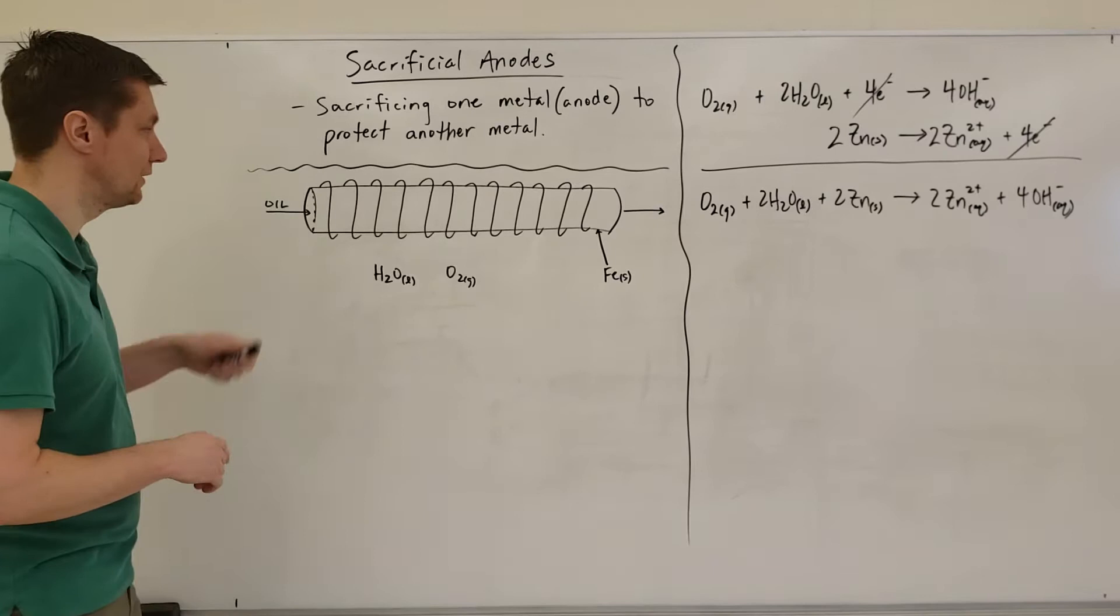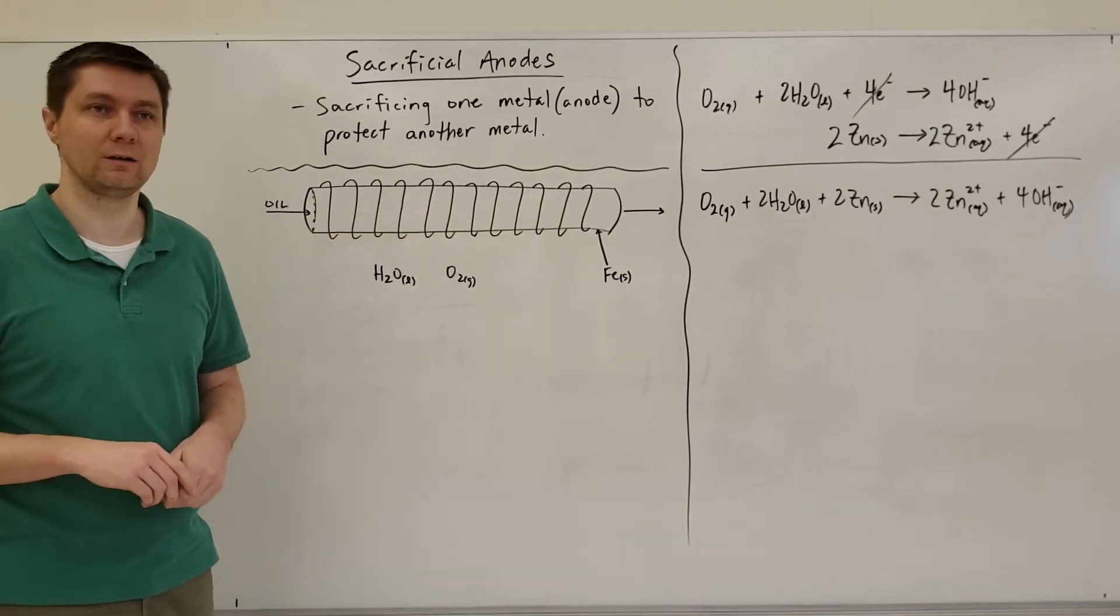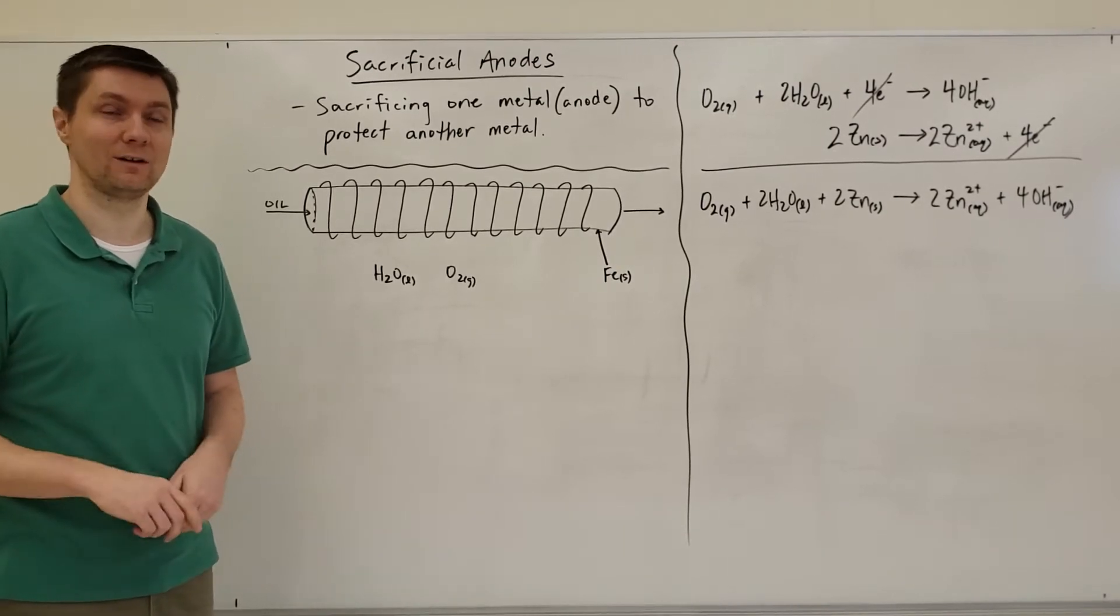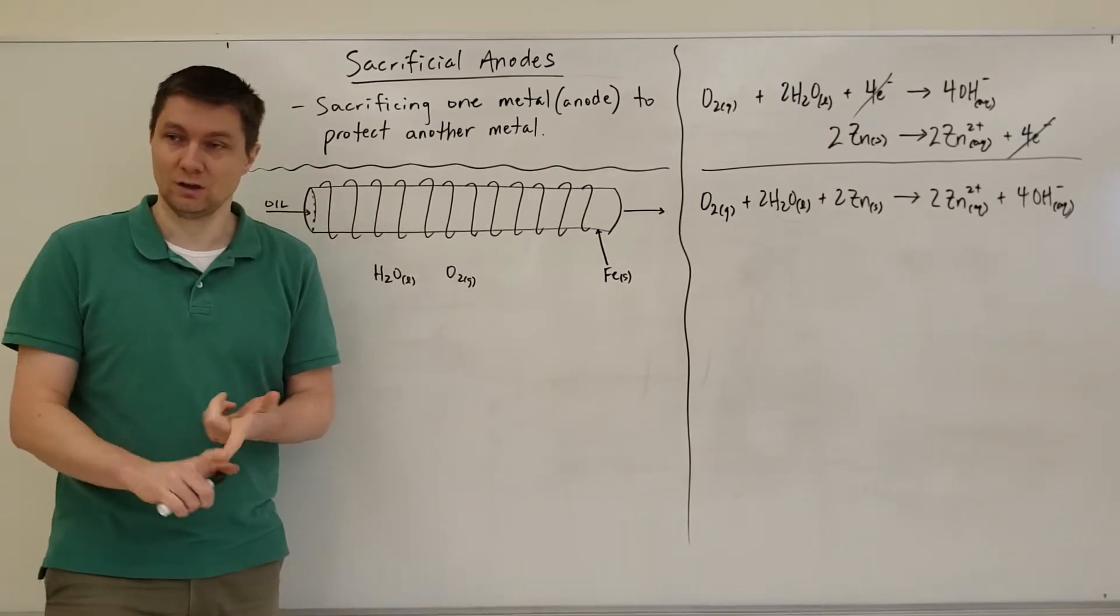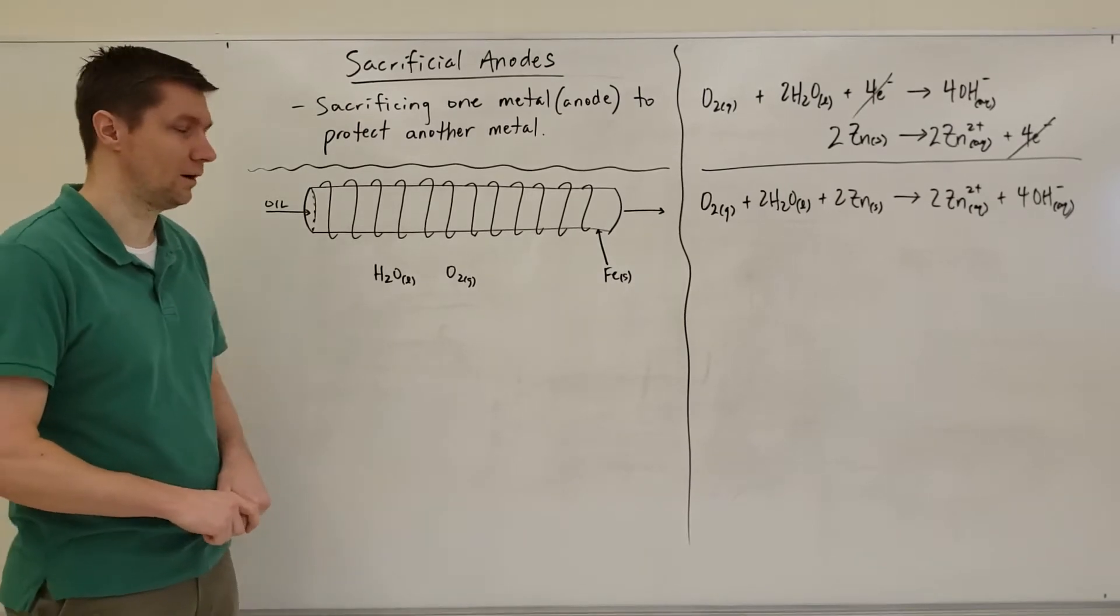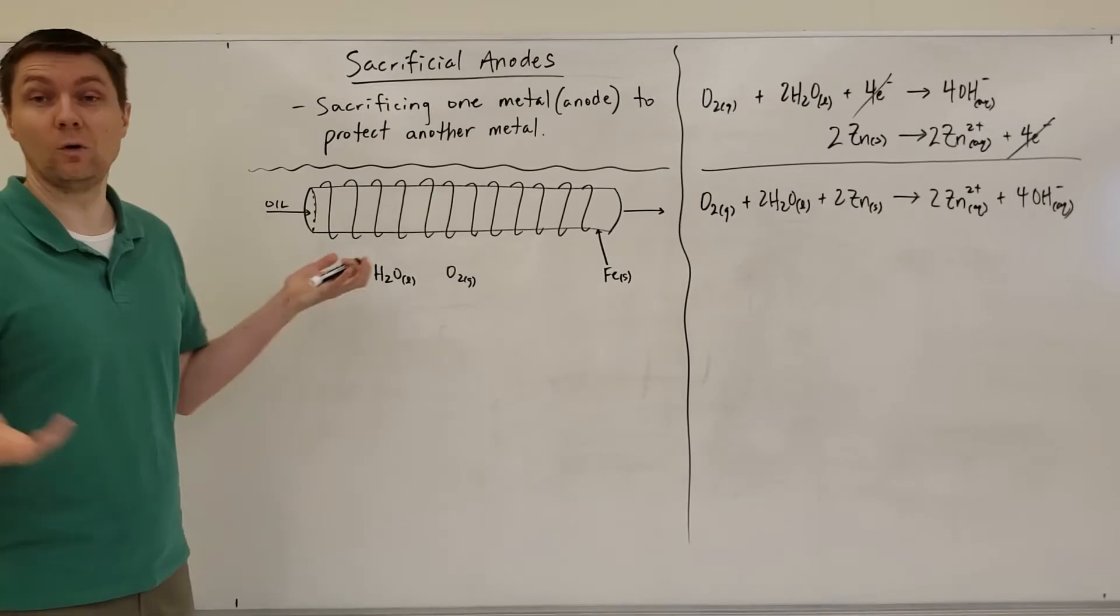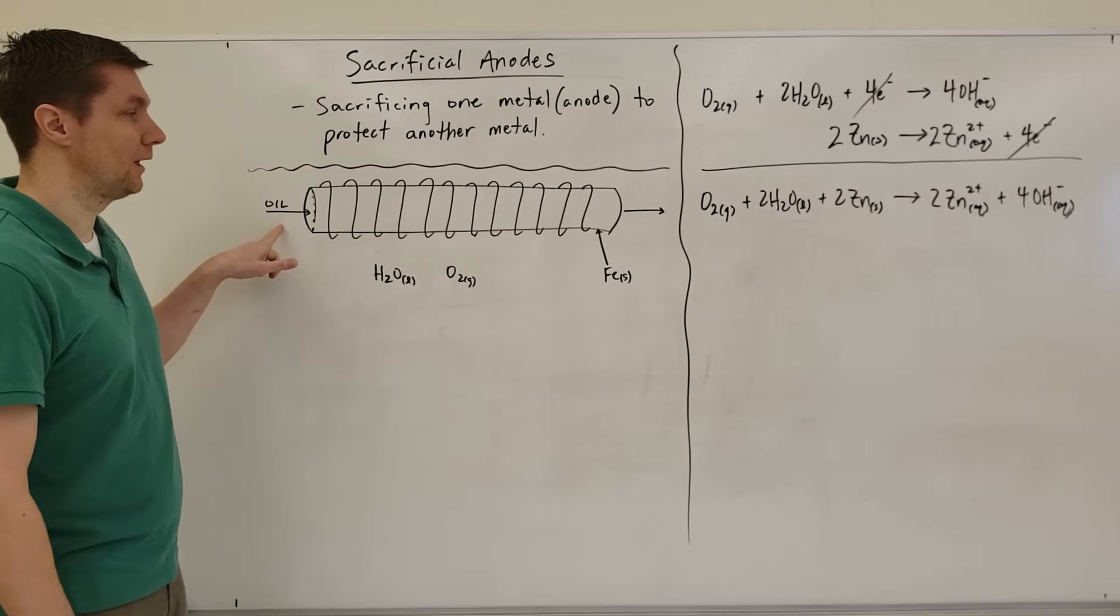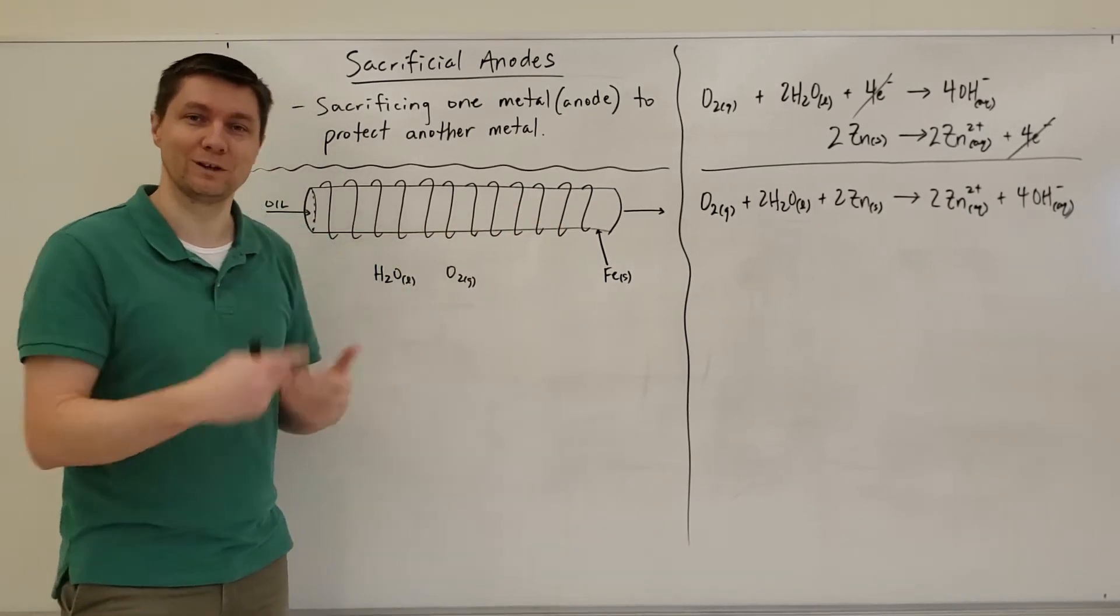The example I always like to go through is pipelines throughout Alberta and across North America that are laid in the ground. These pipelines are made of iron. Iron is a really good metal that's fairly cheap, very strong, and can transport a lot of things, particularly oil. So if we have these oil pipelines laid down in the ground, this is transporting money from one place to another.